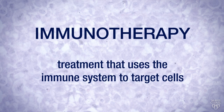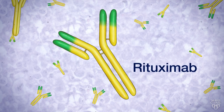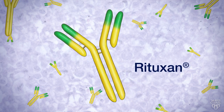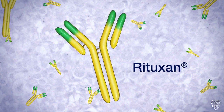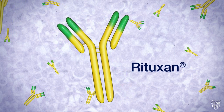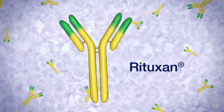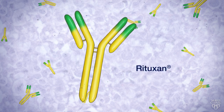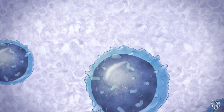Immunotherapy is a treatment that uses the immune system to target cells. Rituximab, or Rituxan, was the first unlabeled humanized monoclonal antibody approved for the treatment of cancer.